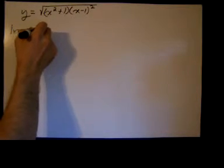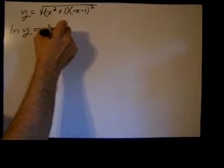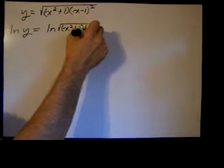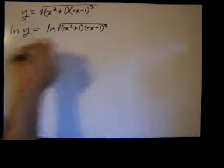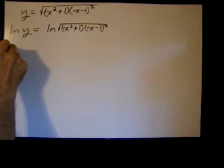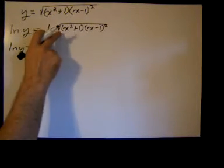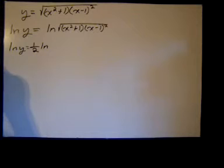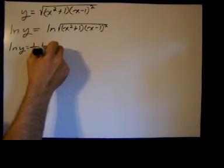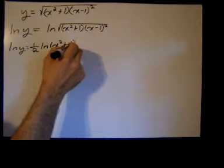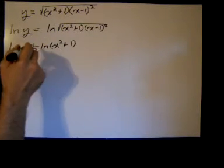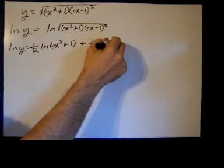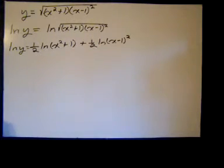We take the natural log of both sides. Now we'll use logarithmic properties to break this down. Remember that's the power of one half, so we'll have one half natural log of, then I have a product. I'm just going to skip a step here because I've done plenty of these. I have a product, so I have one half natural log of x squared plus one plus one half times the natural log of x minus one squared.